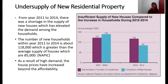The graph illustrates the under-supply of new residential property. As a case study from year 2011 to 2014, there was a shortage in the supply of new houses, which elevated demand among households. The number of new households from 2011 to 2014 was about 118,000, which is greater than the average supply of houses at 85,000. As a result of high demand, house prices increased beyond affordability.